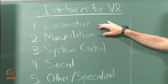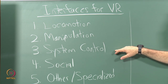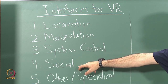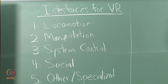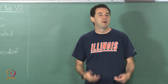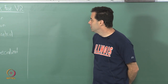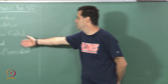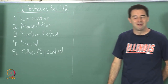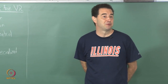The first one was locomotion, the second one is manipulation, the third one is system control, the fourth one is social interaction, and I made a fifth category called 'other' which corresponded to specialized kinds of interfaces for one particular kind of application. The first four categories correspond to fundamentals; these may show up in category 5, but you may also find very unique issues.